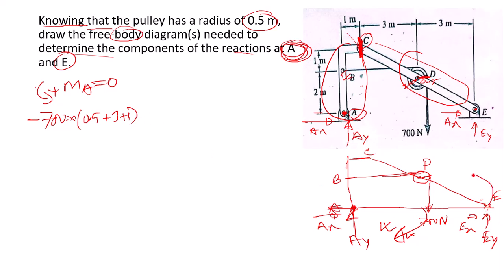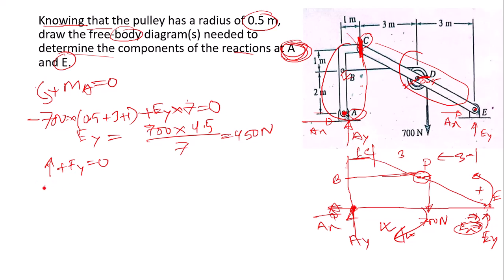E_y is positive. E_x has no perpendicular distance from point A in the x direction, so it equals zero. We get 700 times 4.5 equals 3150.